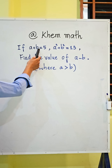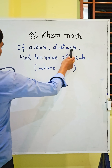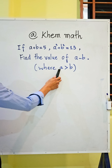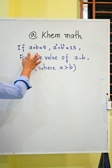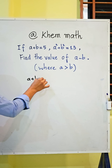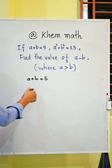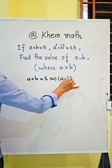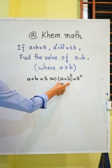If a plus b equals 5, a squared plus b squared equals 13, find the value of a minus b where a is bigger than b. So the first step, we have a plus b equals 5. Now I reconstruct this equation to square — we get a plus b squared equals 5 squared, and we expand it.